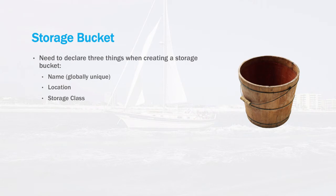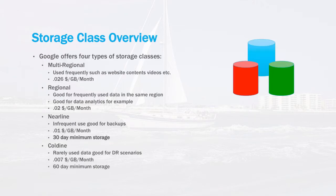All of the concepts in the Google storage system revolve around the concept of a storage bucket. To create a storage bucket is really simple — you only need to declare three things: first, a name which is globally unique across the entire Google Cloud Platform; second, a location, a default region for your storage bucket; and third, a storage class which defines the attributes of the storage bucket itself.